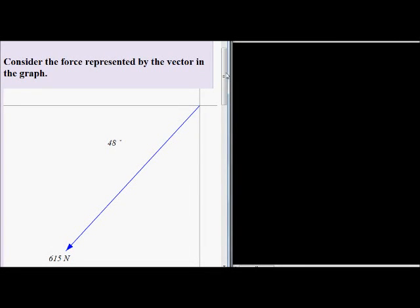Consider the force represented by the vector in the graph. So there we see there's a vector. It's again a force, 615 N is the unit for force. And we notice that it makes an angle of 48 degrees with the horizontal.